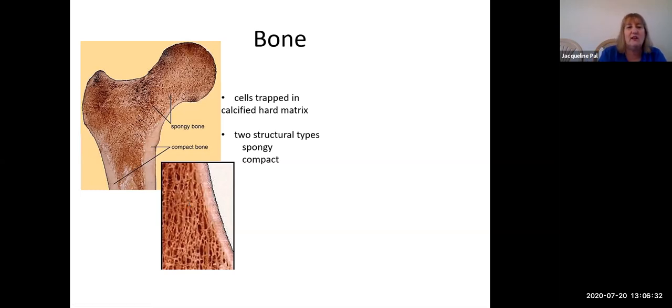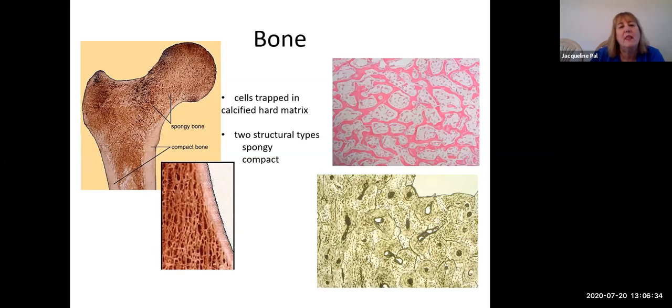Compact bone is real easy to tell because it looks like it has all these tree trunks that have been cut in half. This is a special structure called the osteon, which we're going to learn about in both lab pretty soon and lecture once you come back and you start the skeletal system, which is coming up as the second organ system.